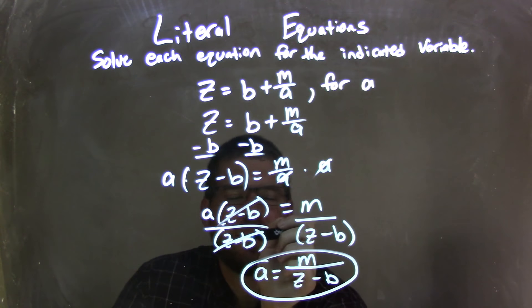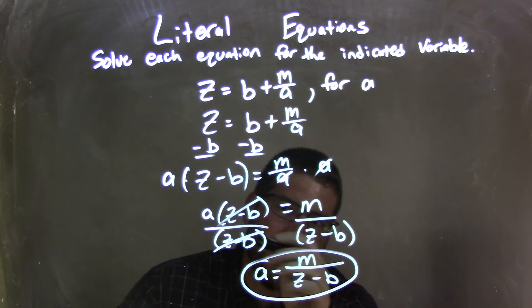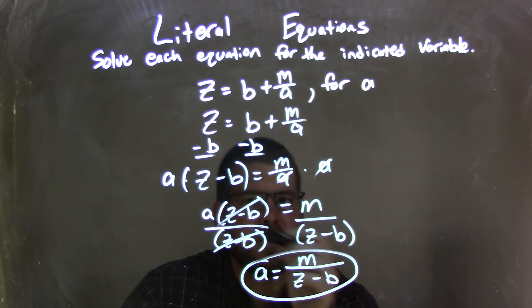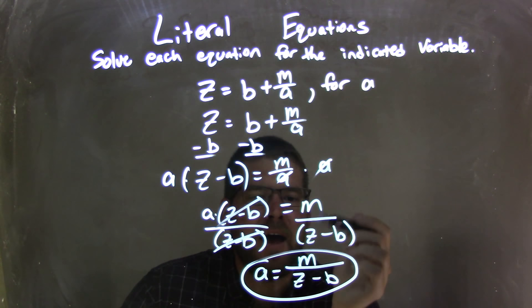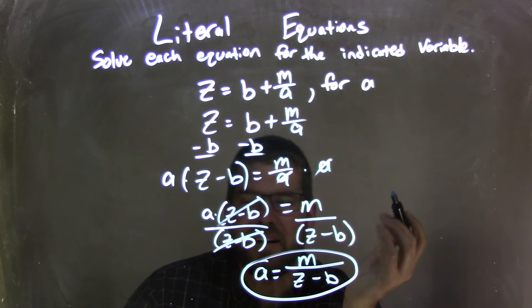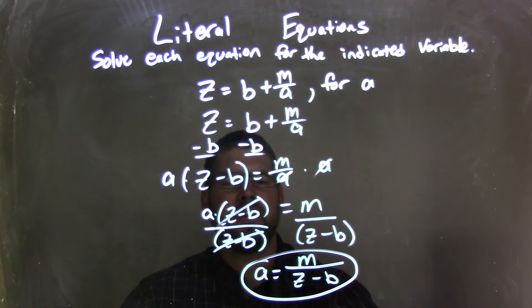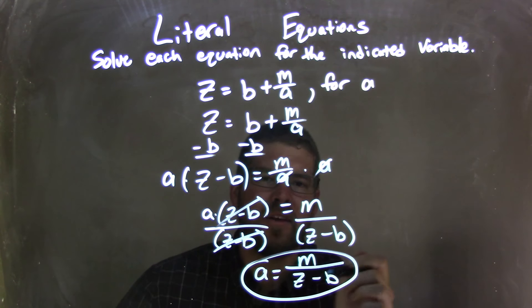But then I need to divide by z minus b to both sides to get a by itself. So I divided the whole parentheses, z minus b, to both sides, because there's multiplication really going on here. And that left us with a equals m over z minus b, z minus b in the whole denominator. We're done. a's isolated, it's by itself. And so my final answer here is a equals m over z minus b.